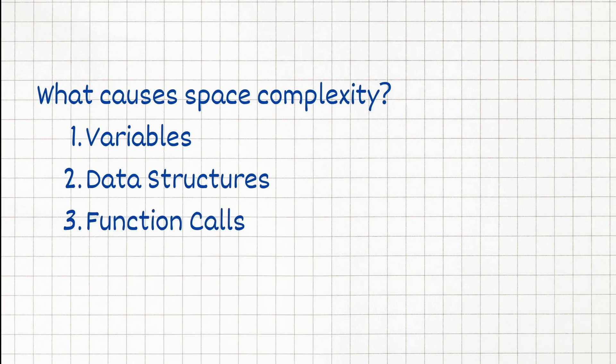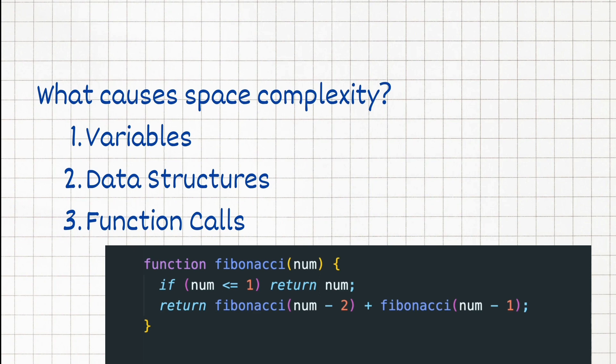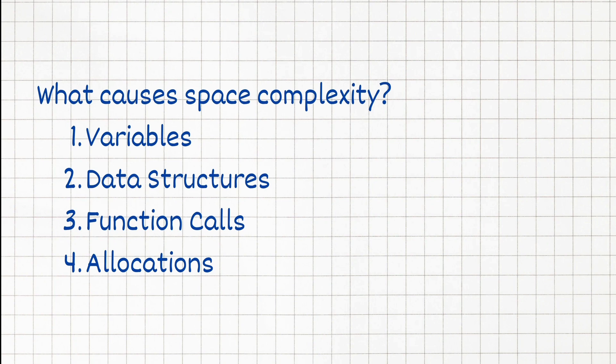Next we have function calls. When we call a function, memory needs to be allocated for its execution. This includes storing function arguments, local variables, and return addresses.